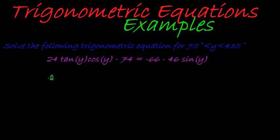And again we take the same approach where our first attempt would be to change everything into sines and cosines, which means our tan can change into sine y over cos y. And then we see that cos y can cancel with cos y, so I am left with 24 sine y. So I have got 24 sine y's on this side.